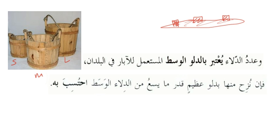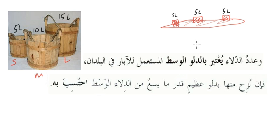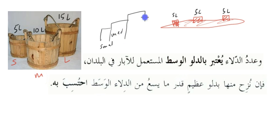We have for example three buckets: a small size, a medium size, and a large size bucket. Let's say the small holds five litres, the medium holds ten litres, and the large holds fifteen litres. The buckets used in the city are the small five-litre buckets.